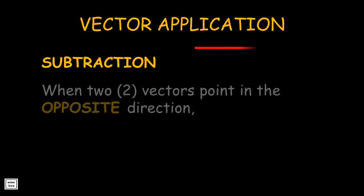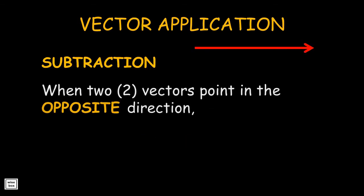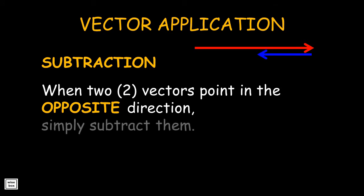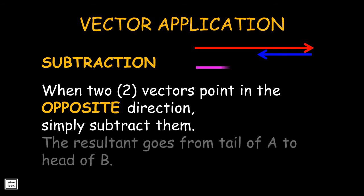When two vectors point in the opposite direction, we can simply subtract them. The resultant still goes from the tail of A to the head of B.